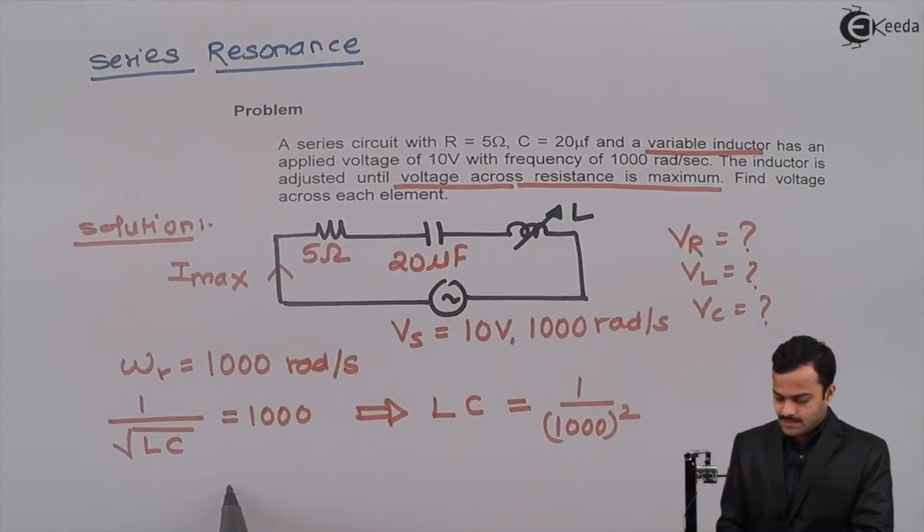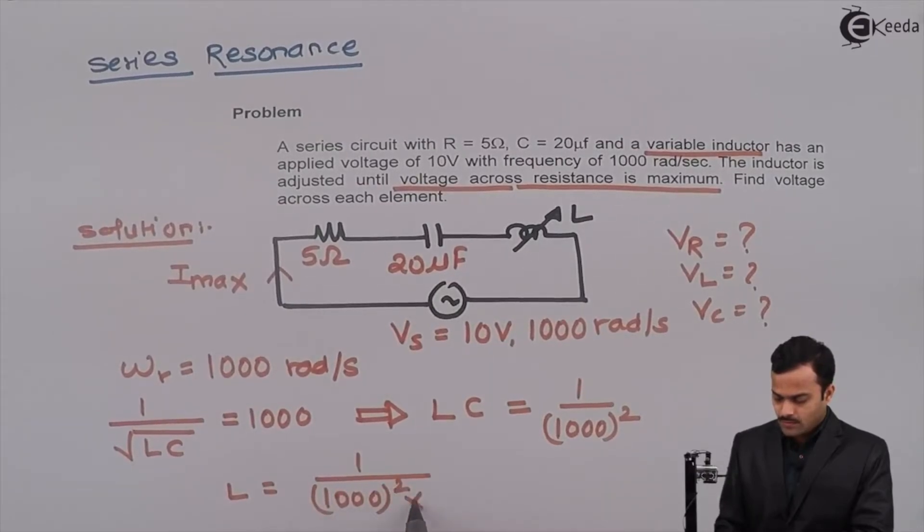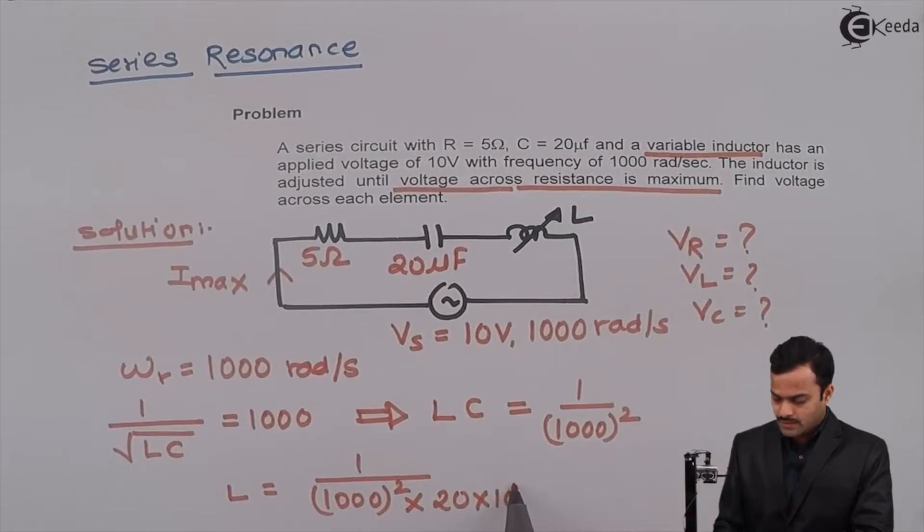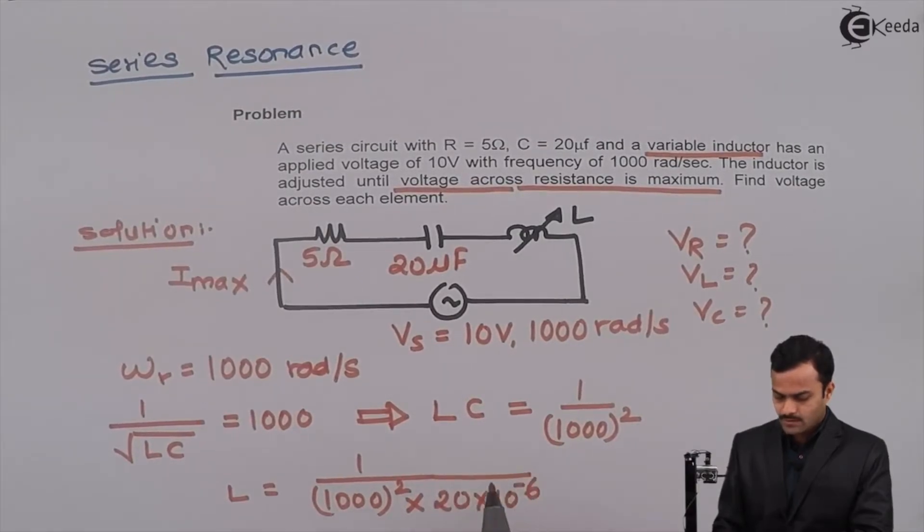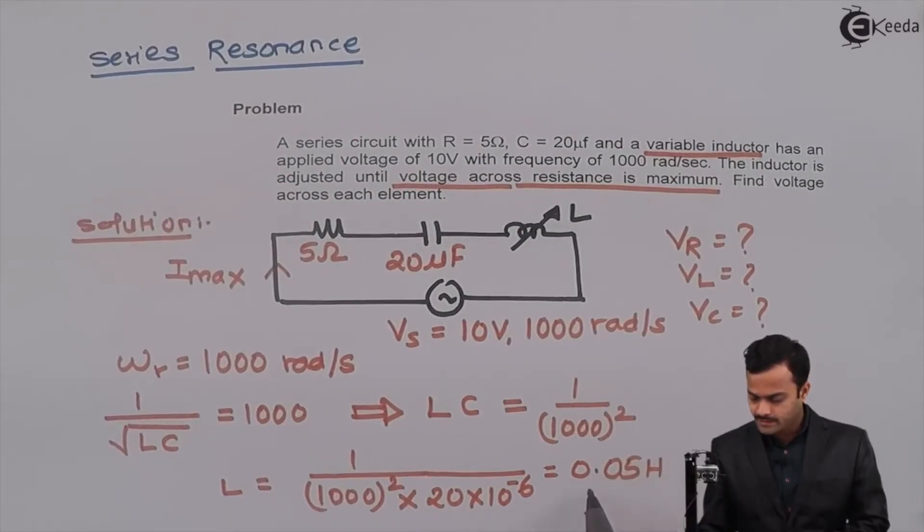And hence, L equal to 1000 square multiplied by 20 into 10 raised to minus 6. If you solve, I will get L equal to 0.05 Henry.